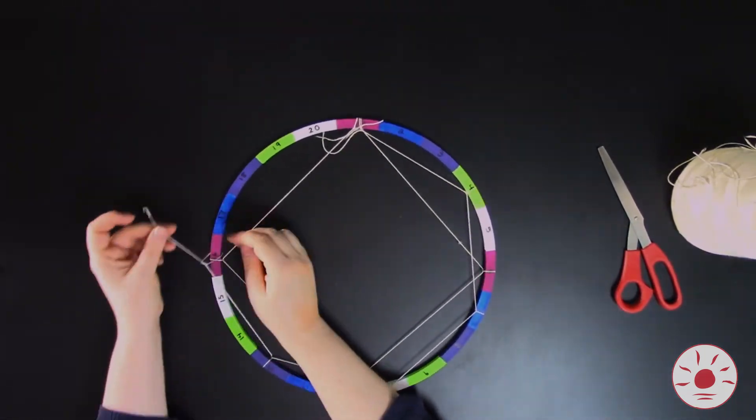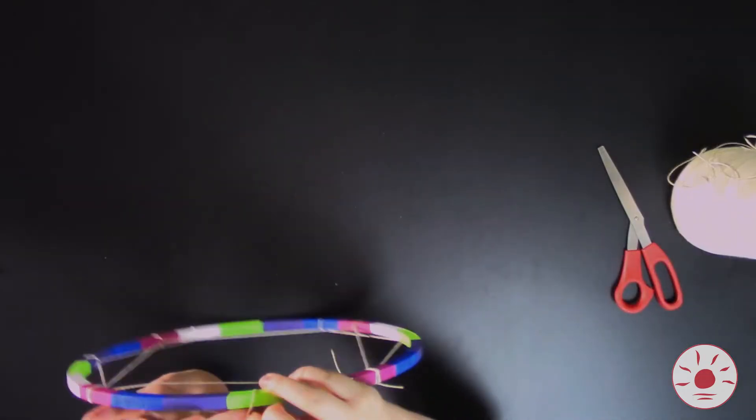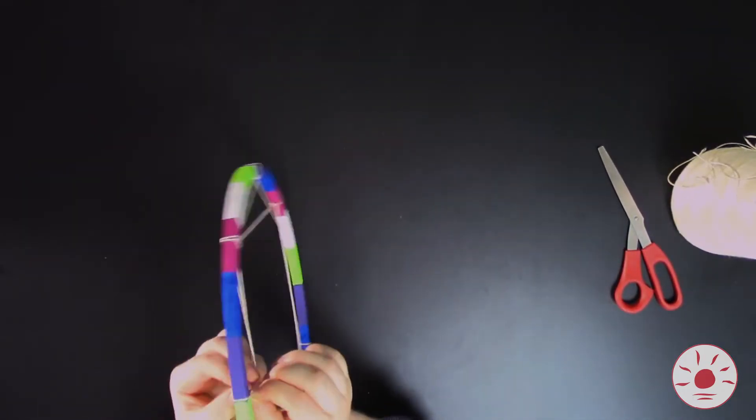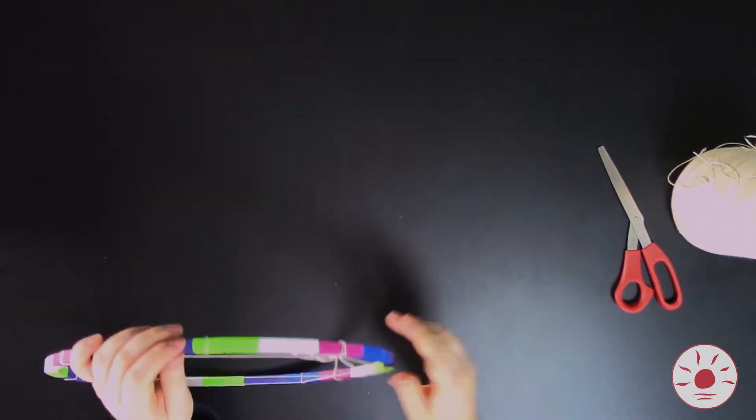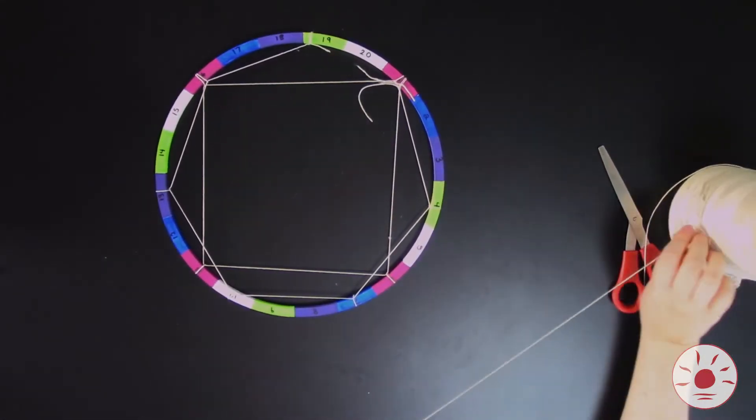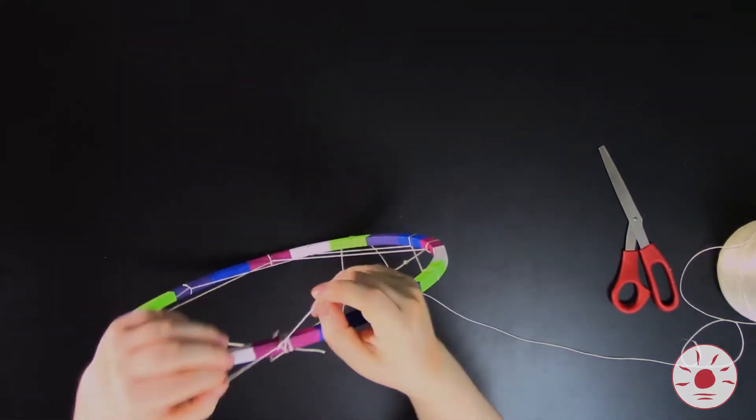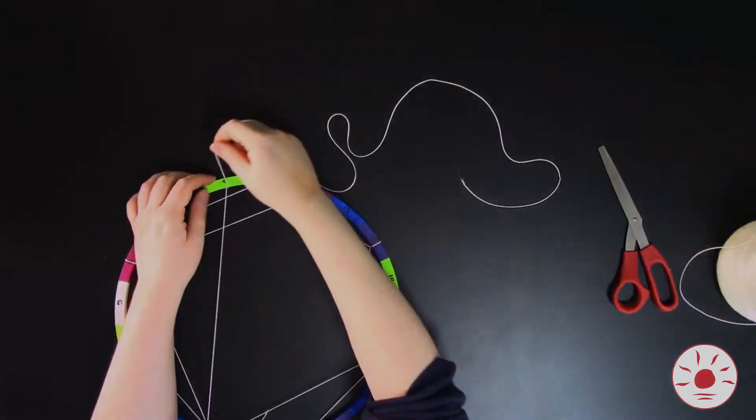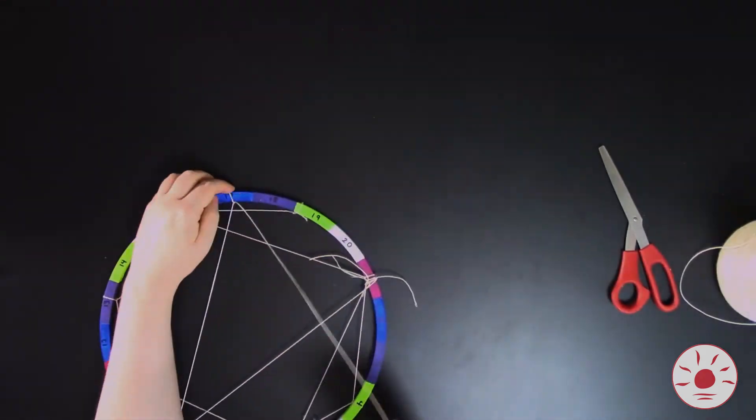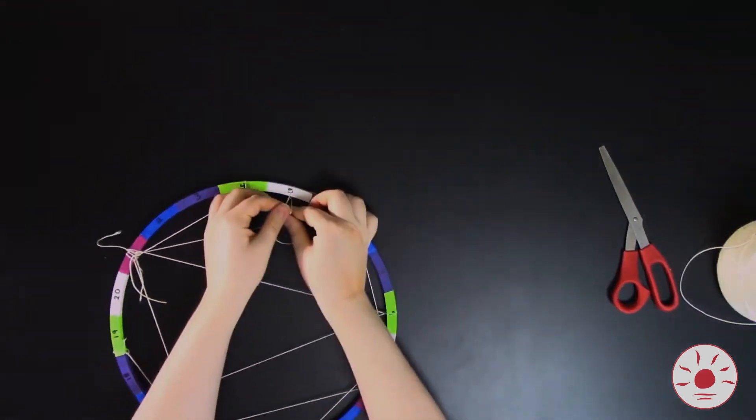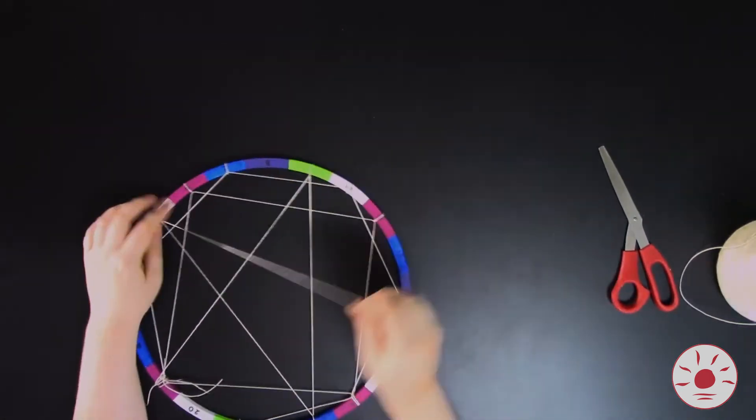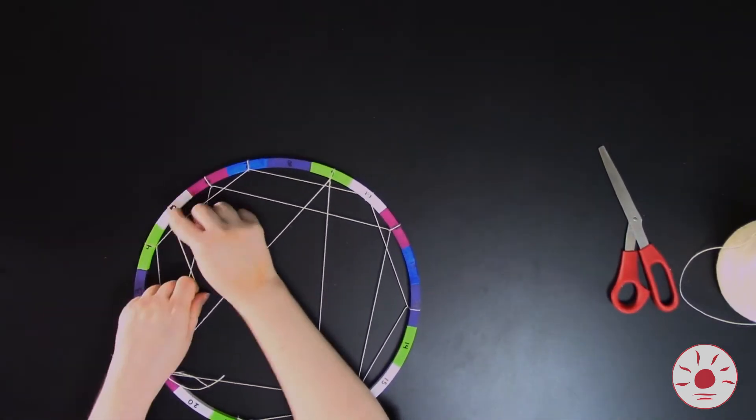If you have more string, you can continue counting 3 sections over until you run out of string, or you think it looks nice, or you can just tie it off the first time you complete the circle. Try counting by different numbers and starting in different spots to create a webbed pattern. If you run out of string, you can either tie a new length to the end of the old one, or just start in a new section.